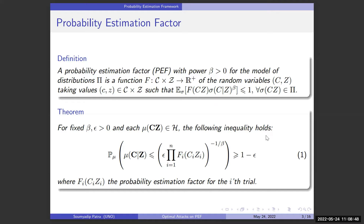The Probability Estimation Framework involves direct estimation of the conditional probabilities of obtaining outcomes conditioned on settings. This inequality basically says that with very high probability the product of the trial-wise PEFs — multiplied by some error tolerance and raised to the power of negative 1 over beta — serves as an upper bound to the conditional probability of the outcomes conditioned on settings, where each f_i is the probability estimation factor of the i-th trial.